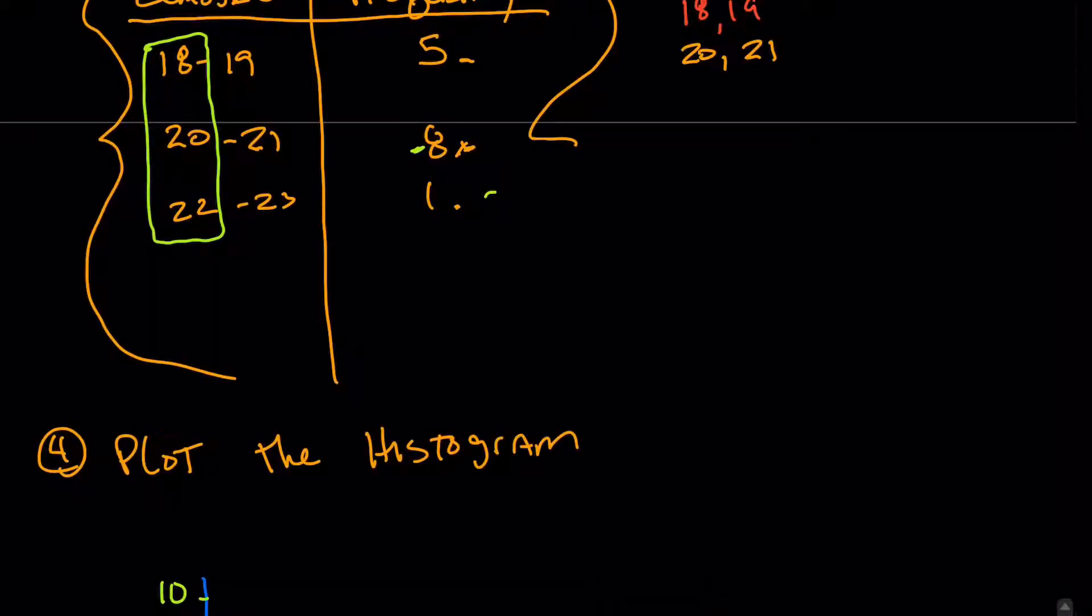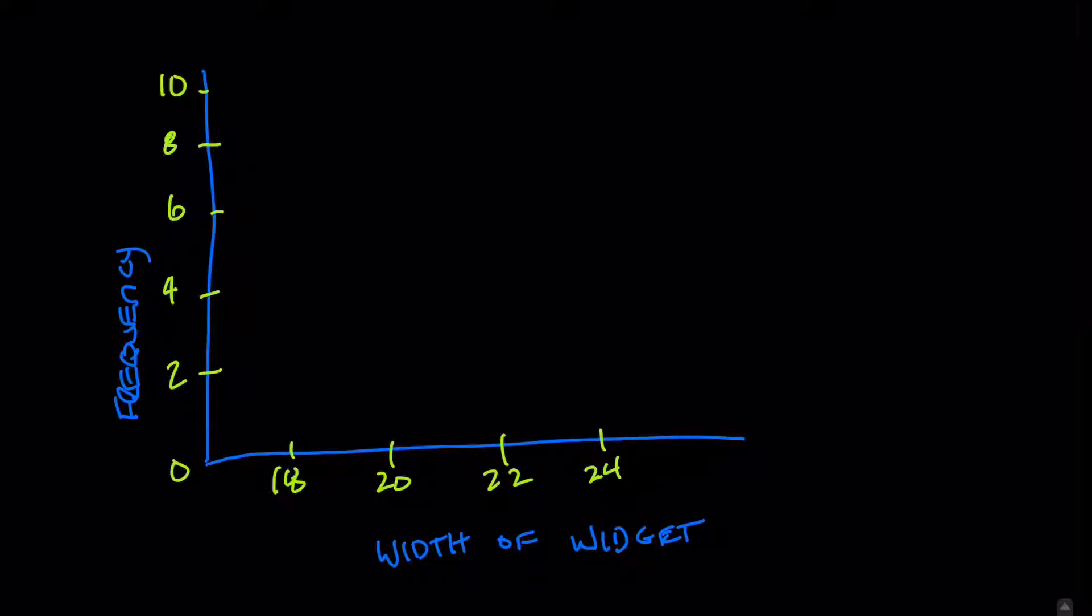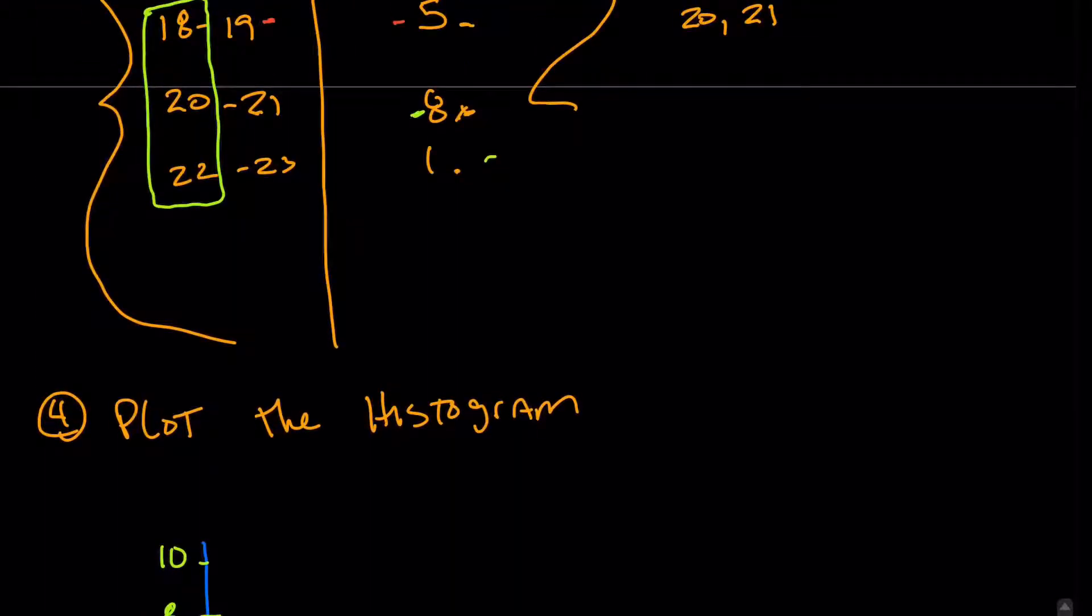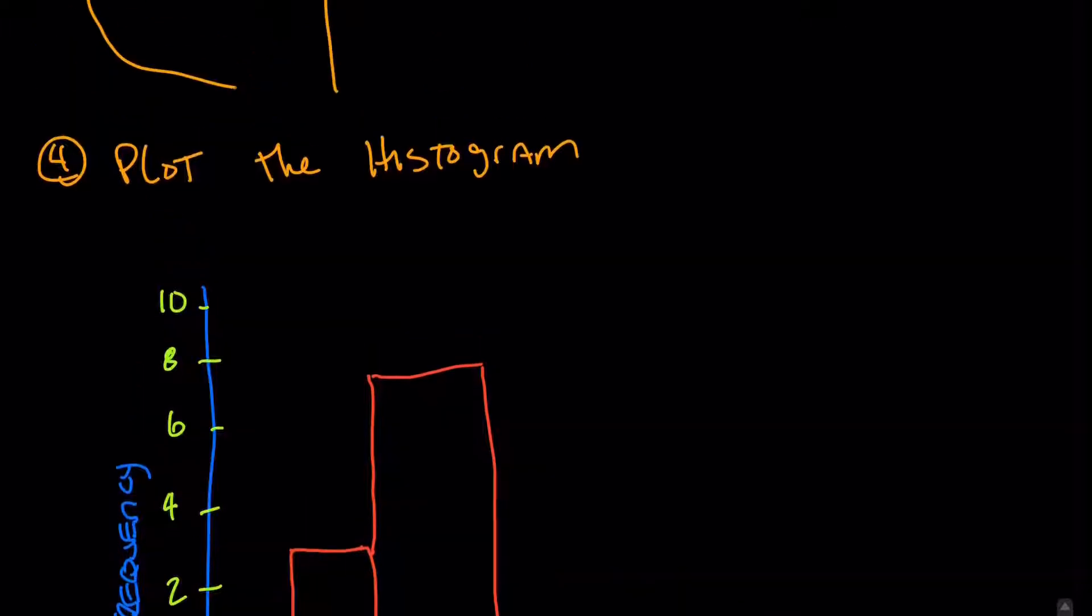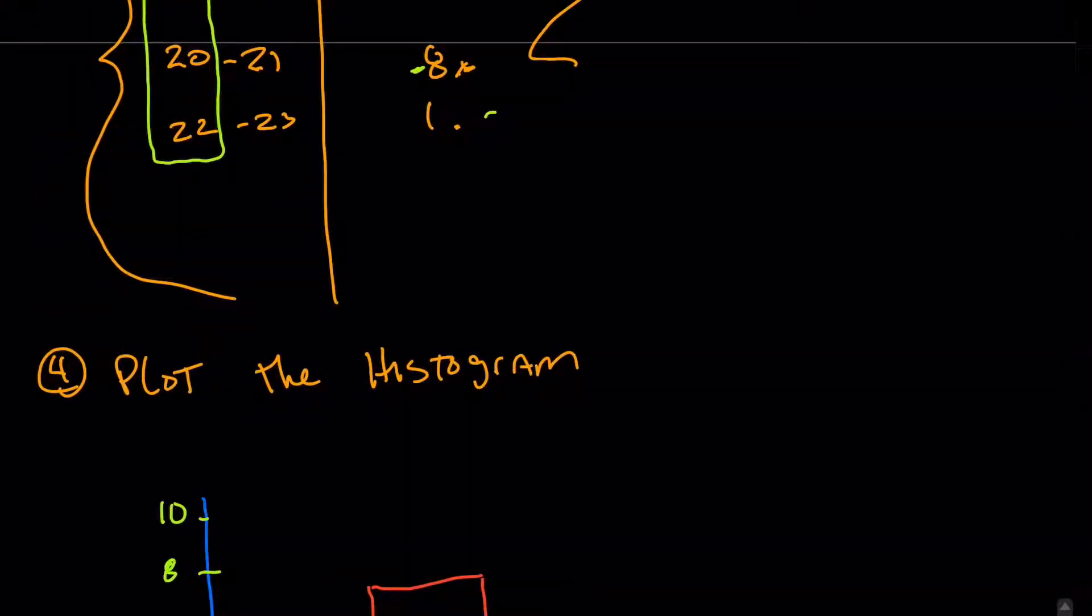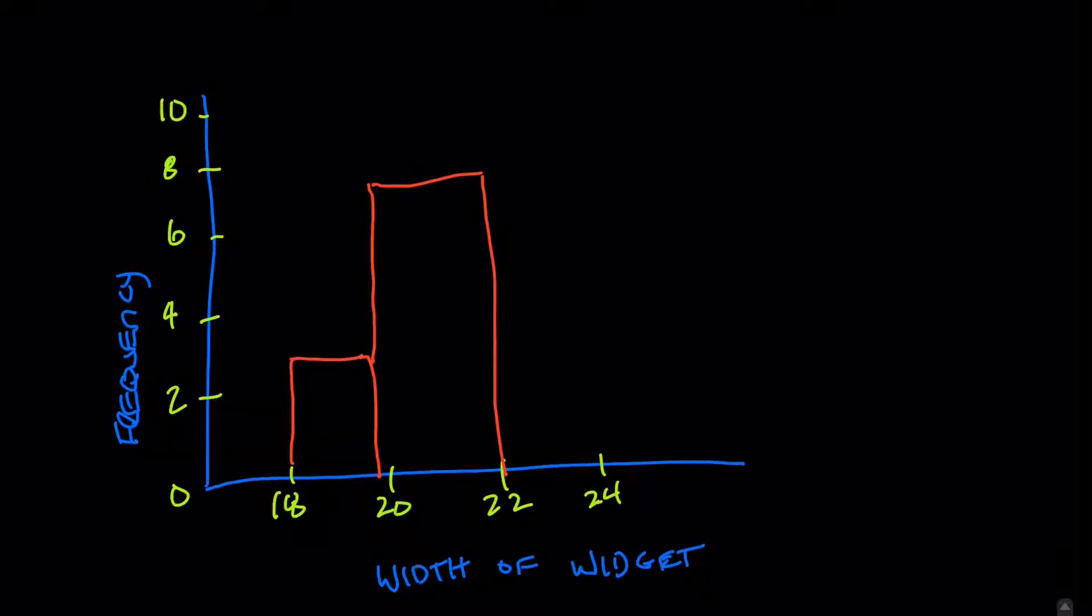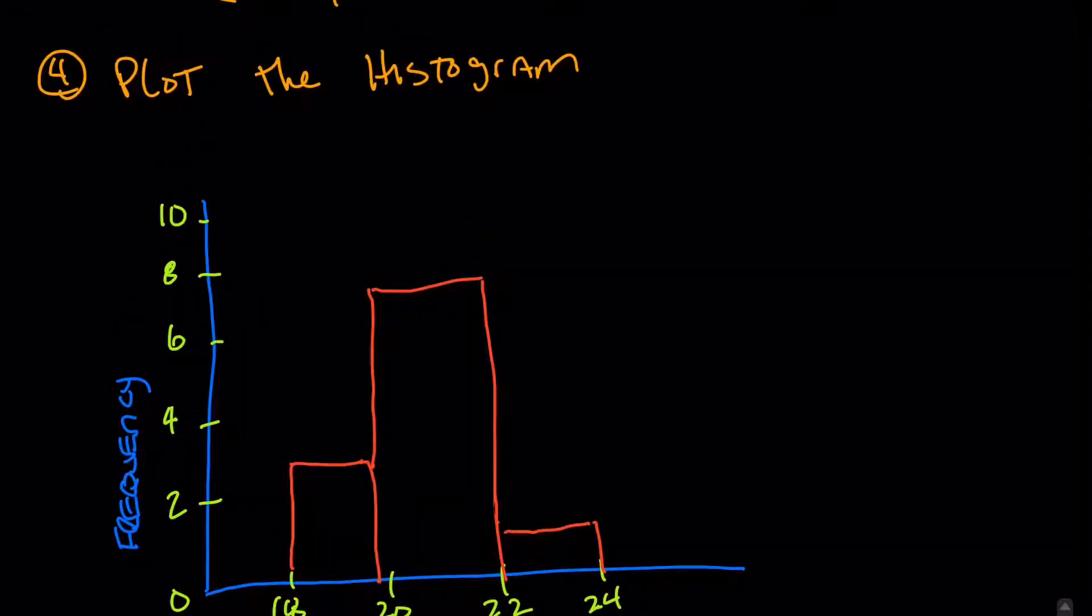So now we want to go ahead and plot the frequency of those classes. So from 18 to 19, we had a frequency of five. So you come down and you find about where five is. And you plot, and it should be on that 20, but you plot the five. And then you go to the next one. 20, 21, you had a frequency of eight. So from 20 to 21, you had a frequency of eight. And then for 22 to 23, you had a frequency of one. So 22 to 23, you had a frequency of about one. So that's how you would plot your histogram.